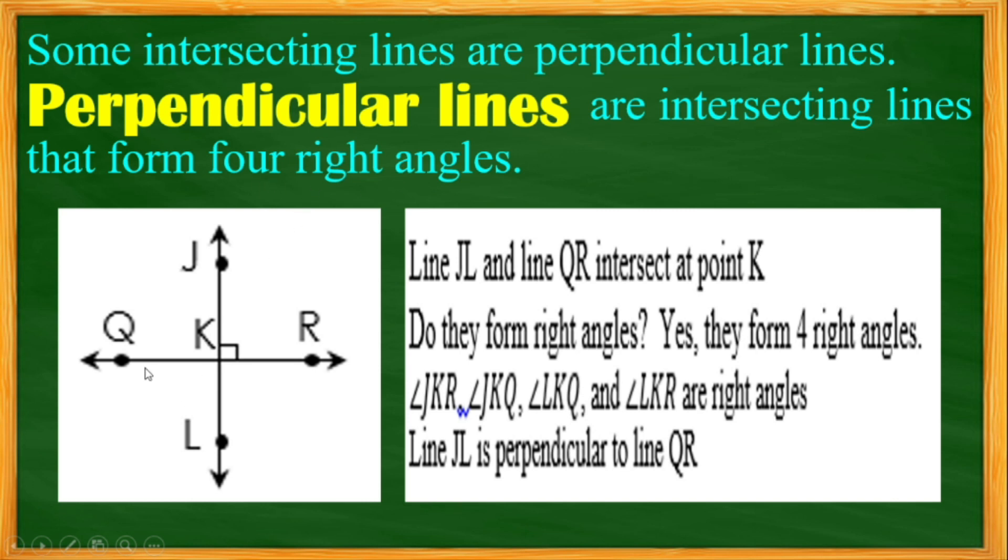For this example, line QR intersects with line JL. We have a point of intersection K. As you may see, we have a right angle, this one. So right angle 1, 2, 3, and 4.